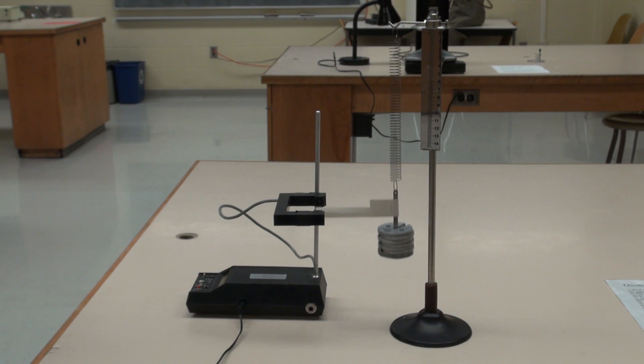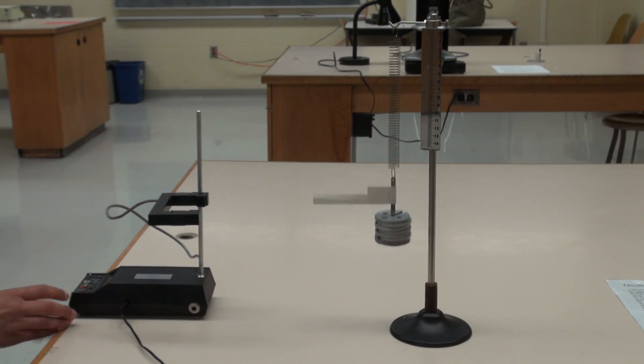To test for repeatability, perform the same measurement with the same mass. If the two times are within one or two hundredths, not thousands, of a second, you are ready to measure the period for a different mass.